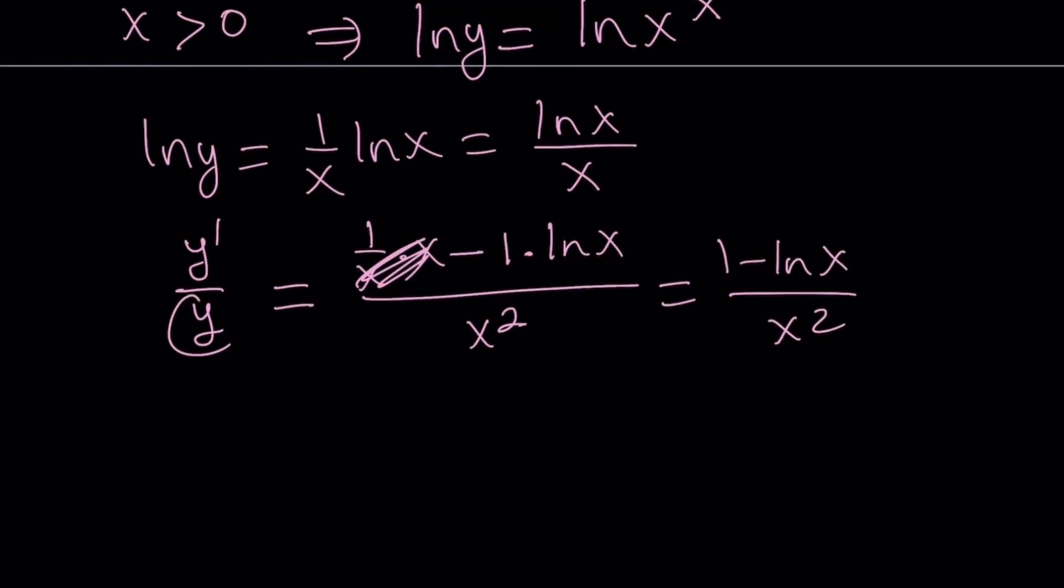So this is y prime over y from the rules, and the right-hand side can be differentiated using the quotient rule, the derivative of ln x multiplied by x minus the derivative of x, which is 1, multiplied by ln x, and that is going to be divided by x squared. x cancels out, and this leaves us with 1 minus ln x over x squared. We can go ahead and cross-multiply by y, and that gives us y prime equals y times, by the way, y is equal to x to the power 1 over x, so I can write it like this.